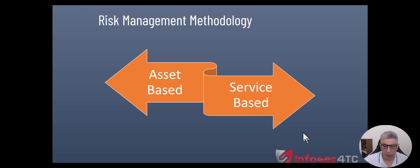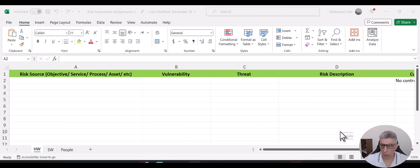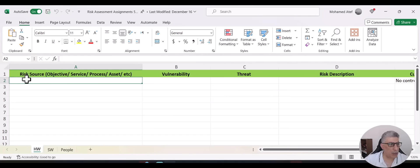Let me show you a template for a risk assessment and explain how we used to do it manually. Then I'll show you how we can do it using AI — and see the amount of effort that ChatGPT can save you and the accuracy you can get on this critical process. In the risk assessment sheet, I start by identifying the risk source — it could be a service or an asset. There's also compliance-based, but we will follow the asset-based methodology.